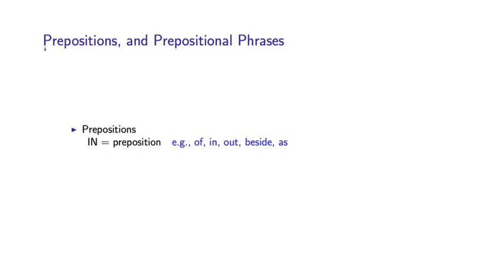Next we're going to look at prepositions and what are called prepositional phrases, and we'll see how these play a role within the grammar. The Brown corpus uses the tag IN to refer to what's called a preposition, and a preposition is a word such as of, in, out, beside, or as.